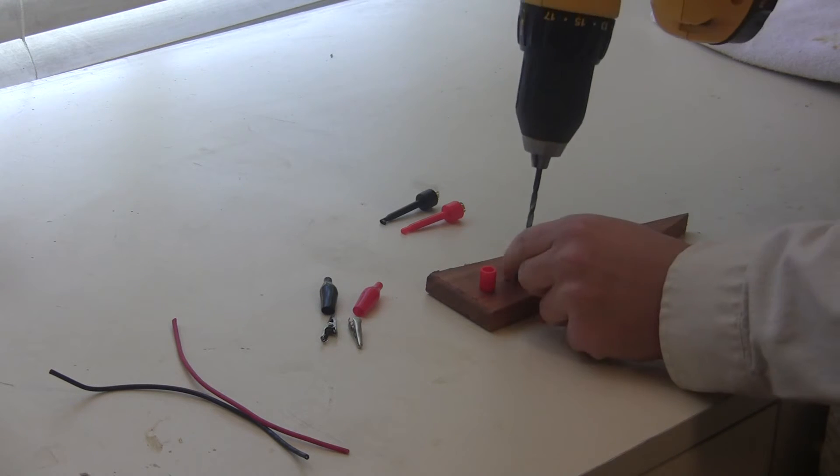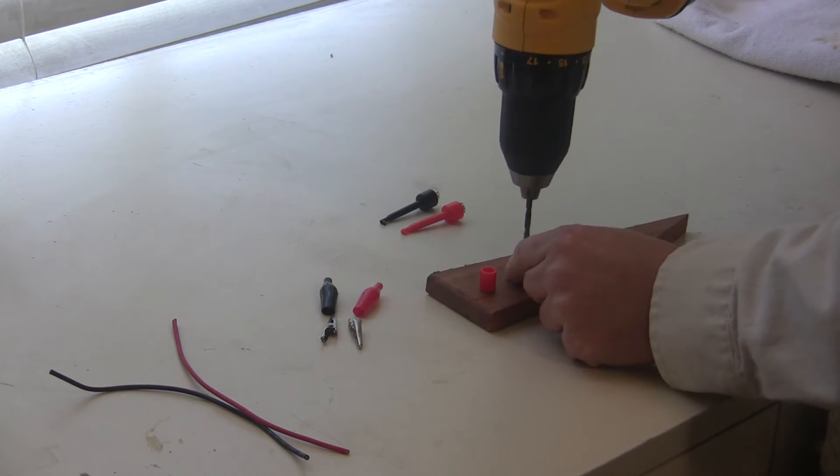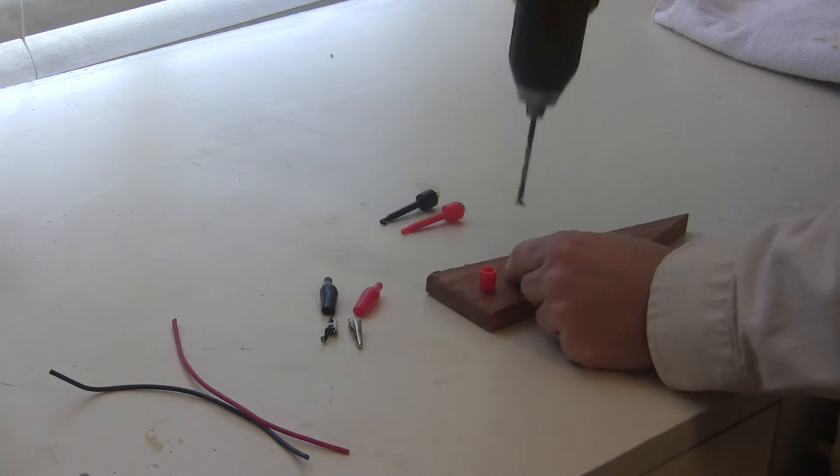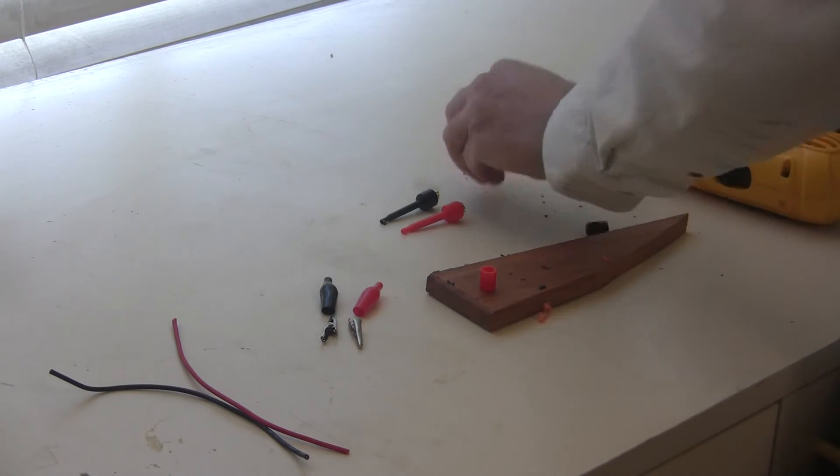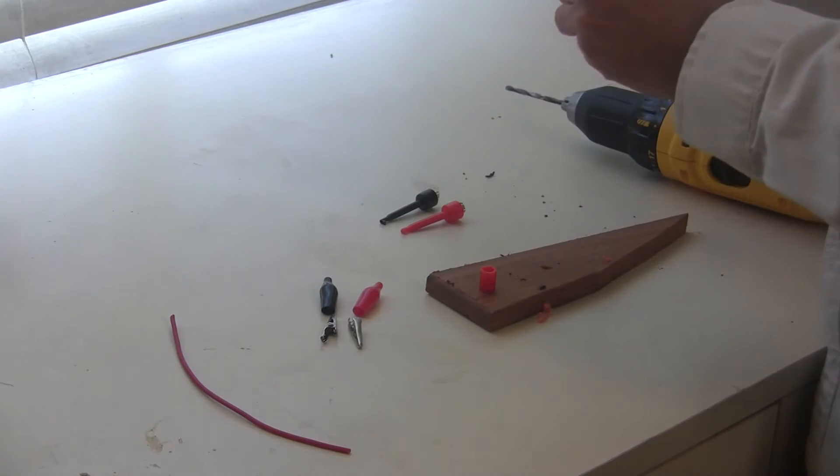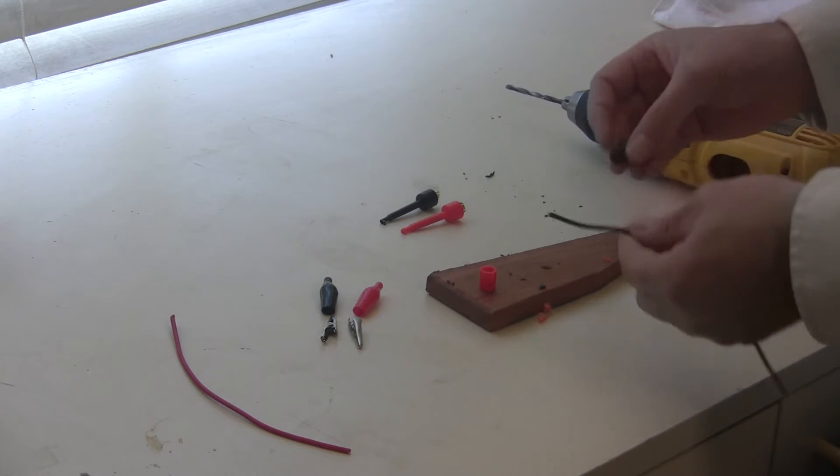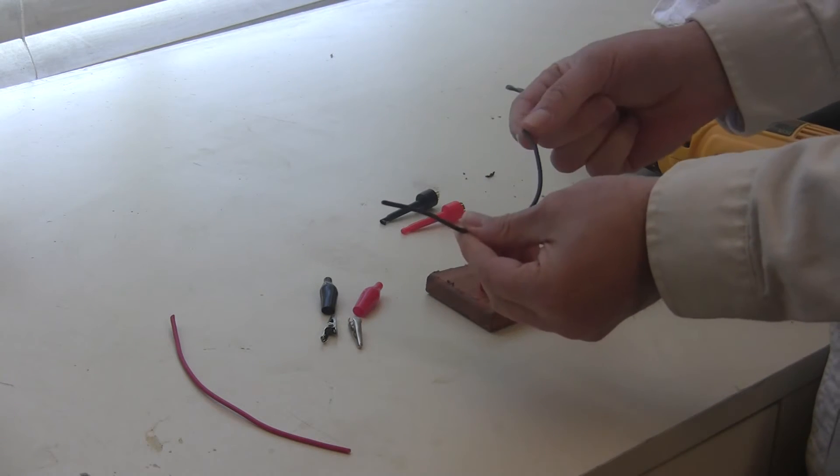I'm using a 9-64th bit but whatever is just a little bit bigger than whatever gauge of wire you're going to use. So just make sure that the wire can fit through there. And the next step is we're going to strip the ends of this wire.